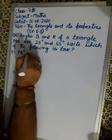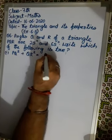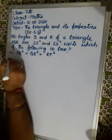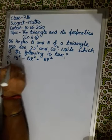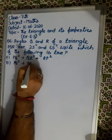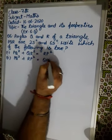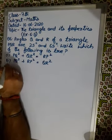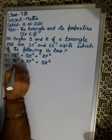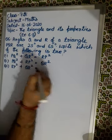The options are: i) PQ² + QR² = RP², ii) PQ² + RP² = QR², and iii) RP² + QR² = PQ².